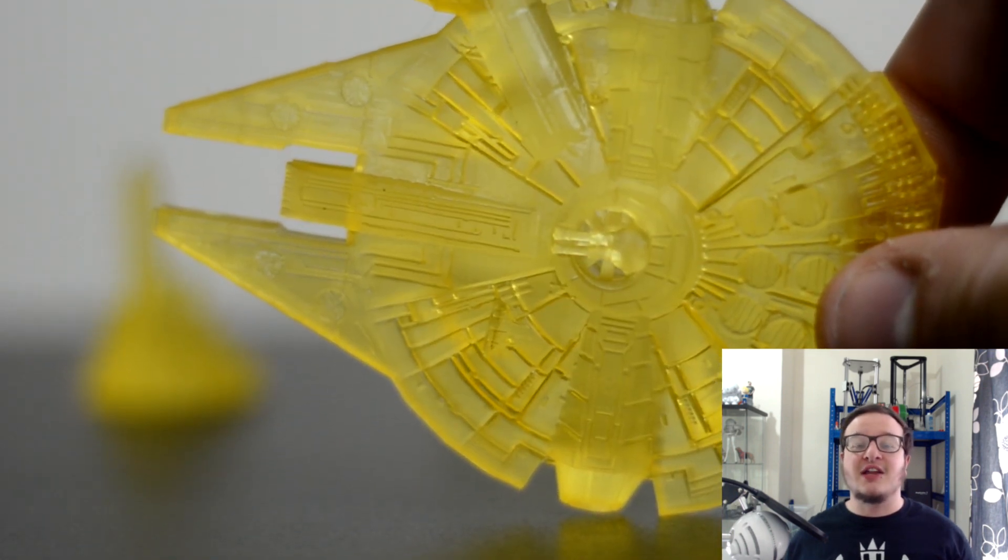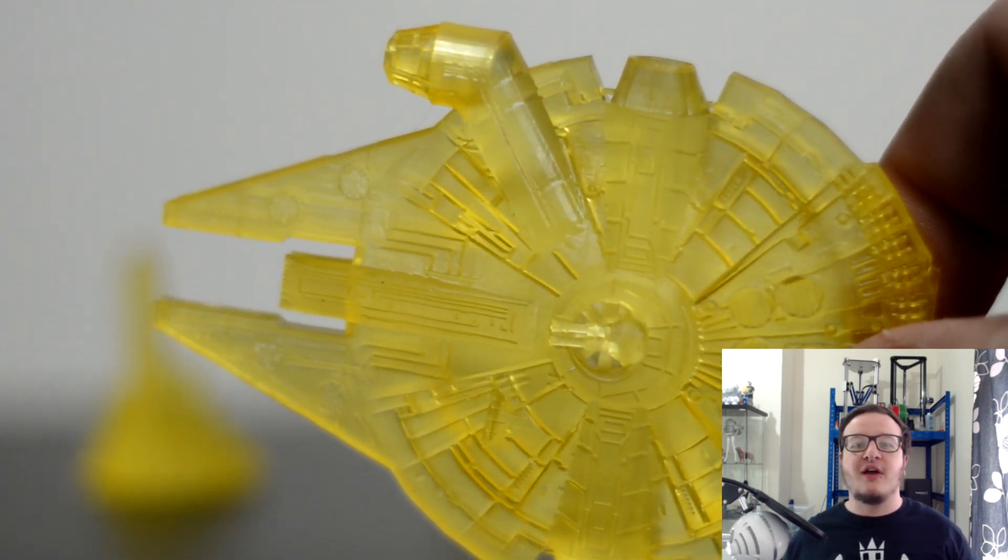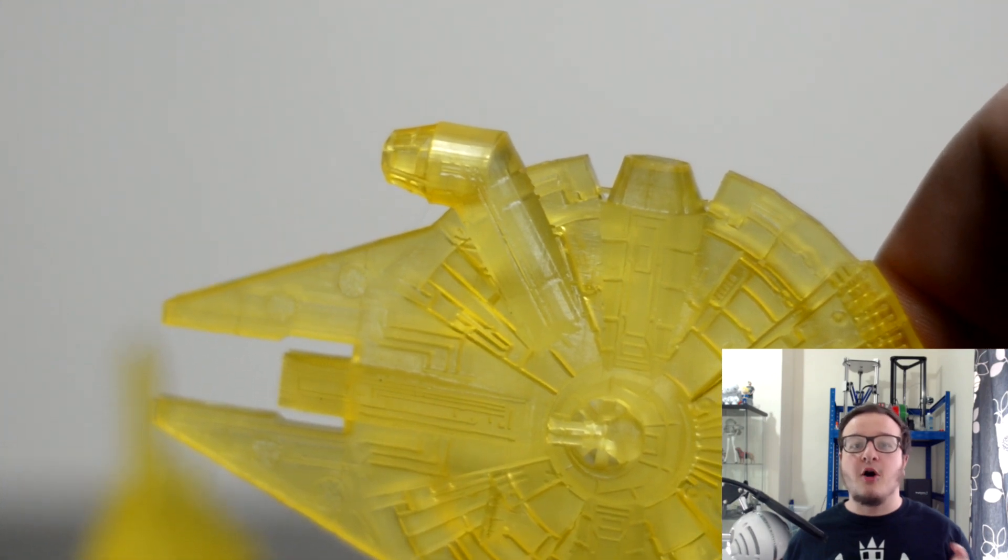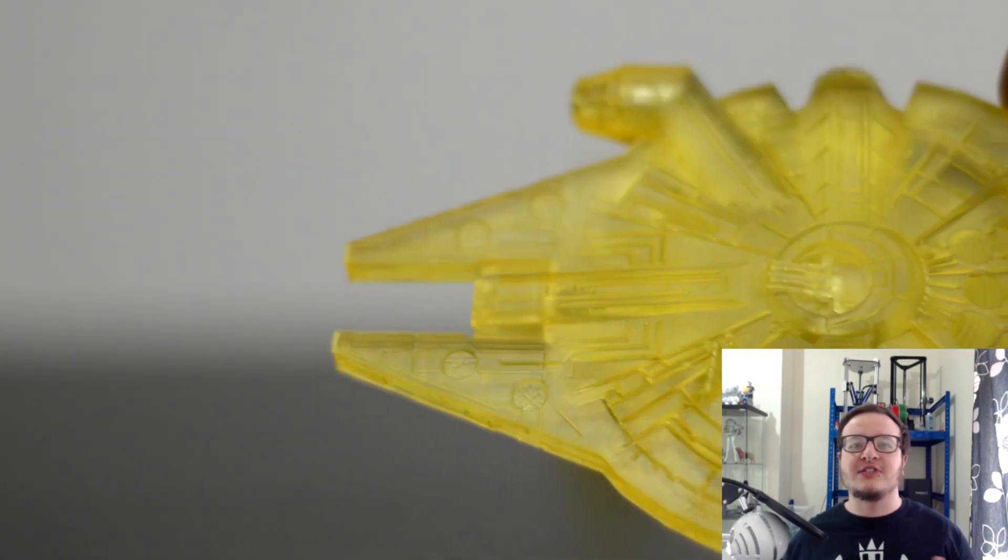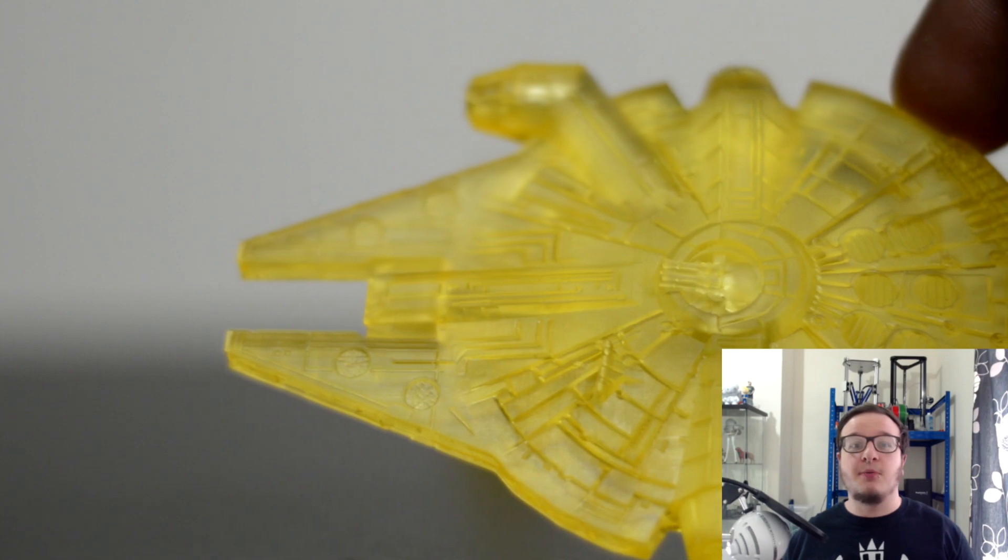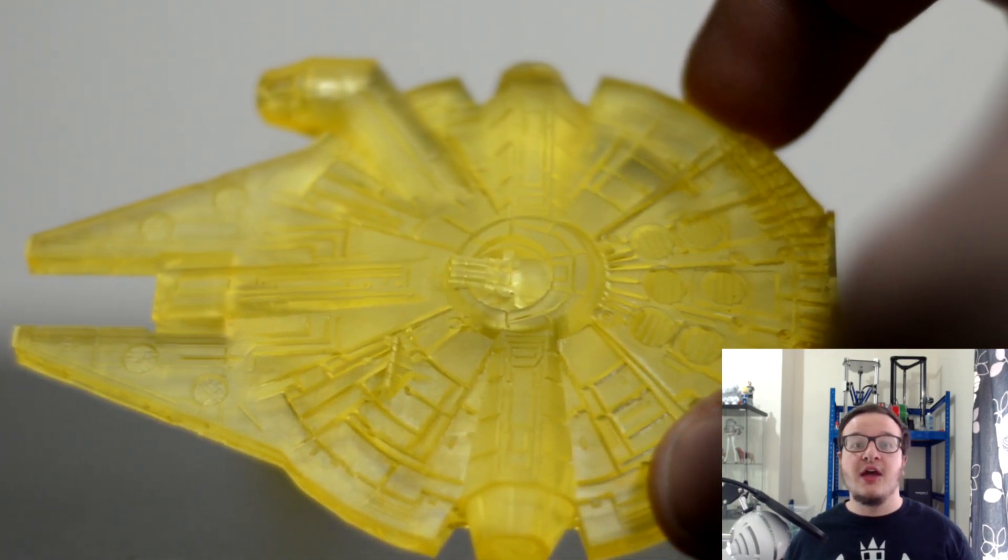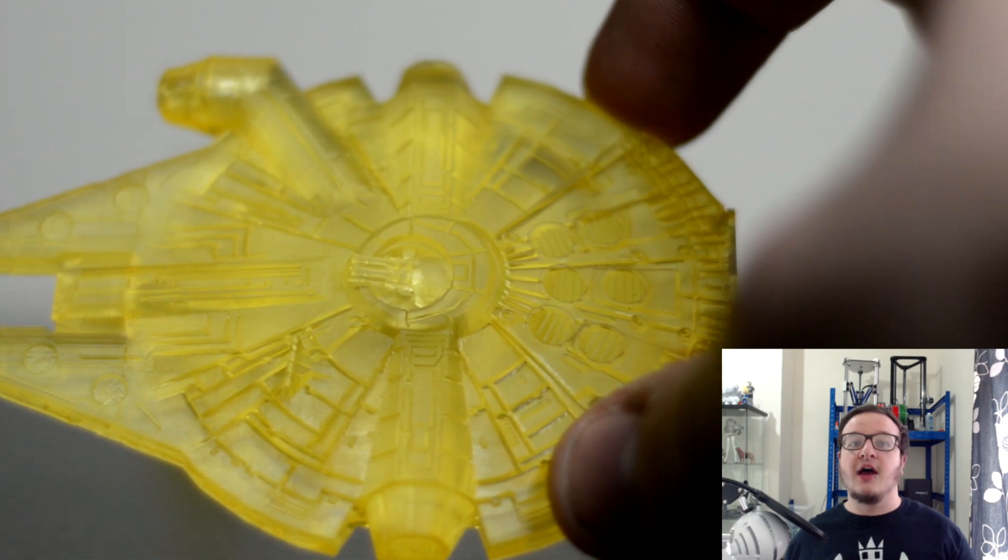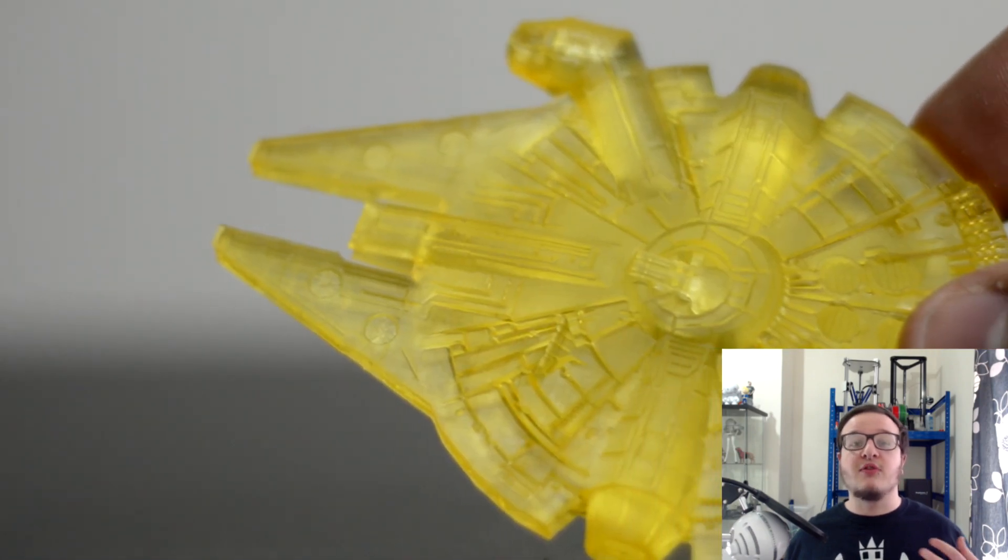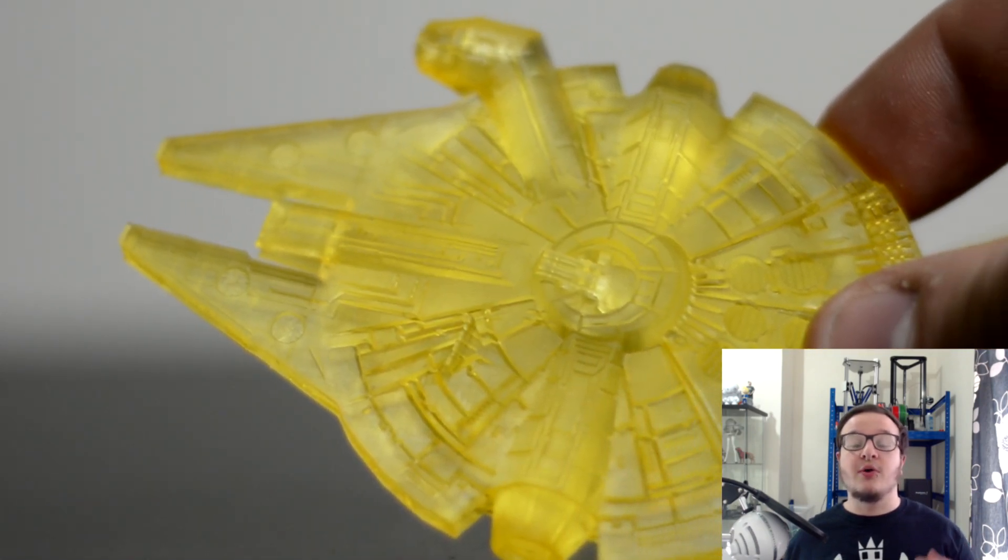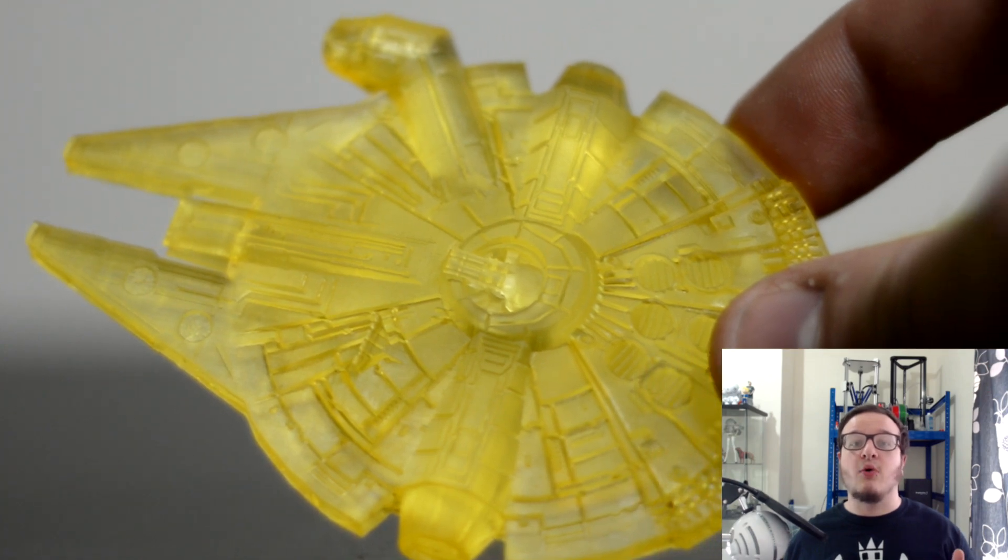Once that was a successful test and I had messed around with the settings I found that a 35 second bottom layer to really cure it, make sure it sticks to the bed nice and strong. Any support is super strong and it's going to hold the part for the entire print and then five seconds per layer. It worked out really well so I knew that that worked so it was time to go into the more detailed higher quality prints.